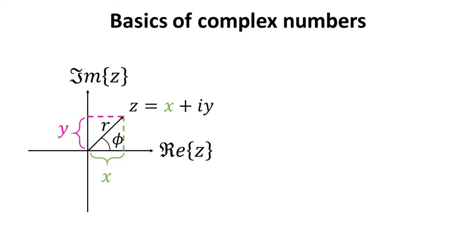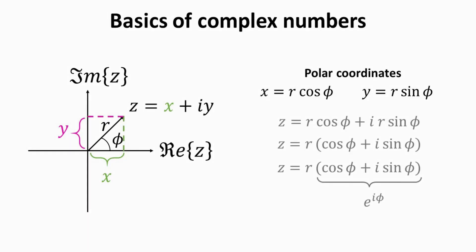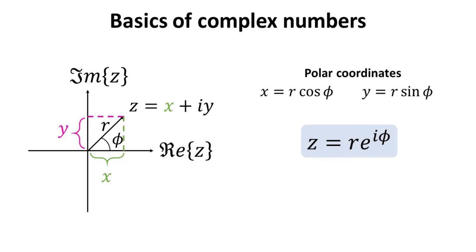We can always switch from Cartesian coordinates X and Y to polar coordinates R and phi, where R is the distance from the origin and phi is the angle from the real axis. In polar coordinates, X is equal to R cosine of phi and Y is equal to R sine of phi. Substituting this into the original rectangular form and using Euler's identity in the last step, we arrive at Z equals R times e to the i·phi. This is called the polar representation of a complex number.